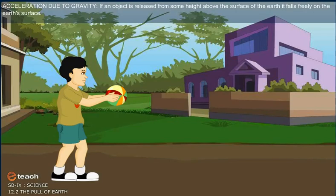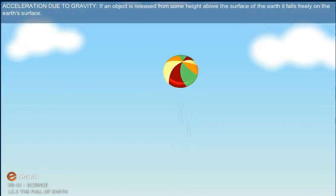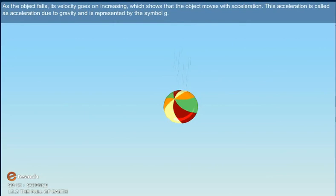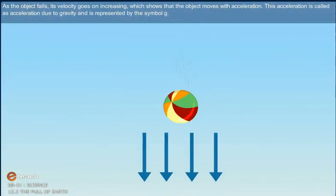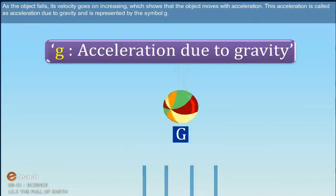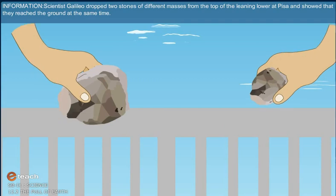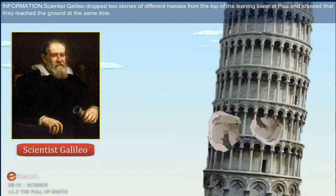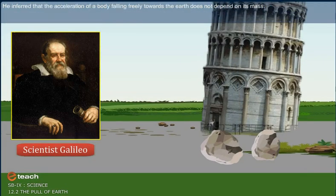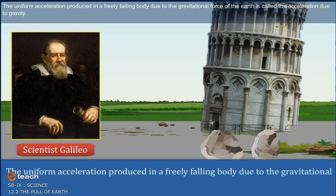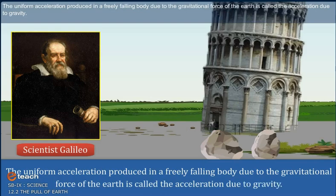Acceleration Due to Gravity: If an object is released from some height above the surface of the Earth, it falls freely on the Earth's surface. As the object falls, its velocity goes on increasing, which shows that the object moves with acceleration. This acceleration is called acceleration due to gravity and is represented by the symbol g. Scientist Galileo dropped two stones of different masses from the top of the Leaning Tower of Pisa and showed that they reached the ground at the same time. He inferred that the acceleration of a body falling freely towards the Earth does not depend on its mass. The uniform acceleration produced in a freely falling body due to the gravitational force of the Earth is called the acceleration due to gravity.